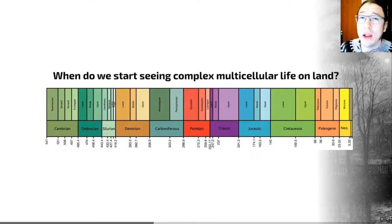Obviously that's quite a loaded question because that really depends on your definition of complex. Cyanobacteria are very complex creatures but what I really mean is when do we start seeing modern type ecosystems that comprise plants and animals appearing.